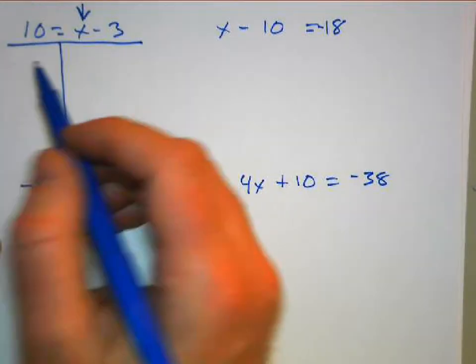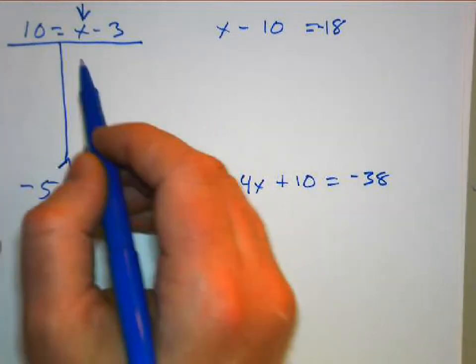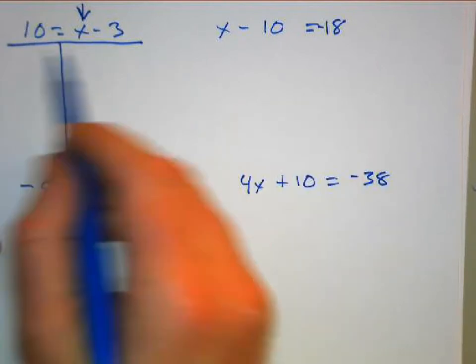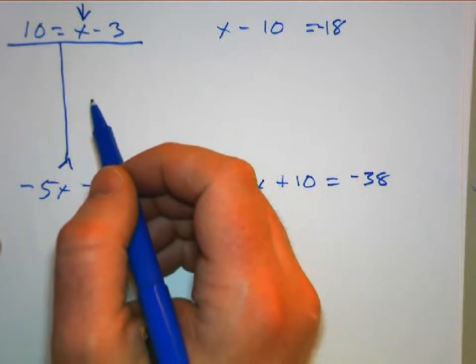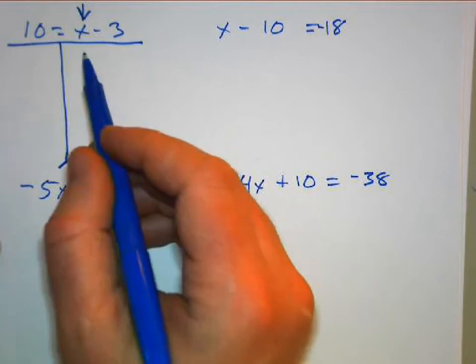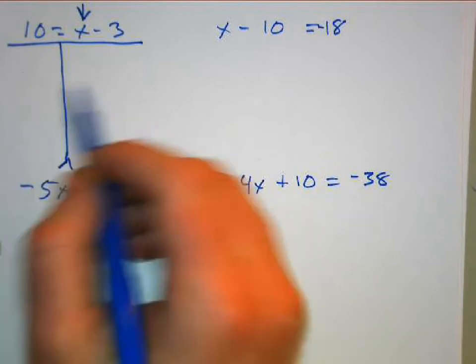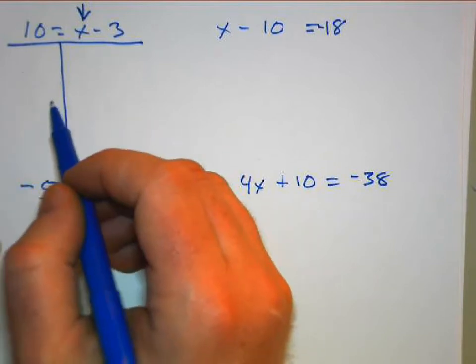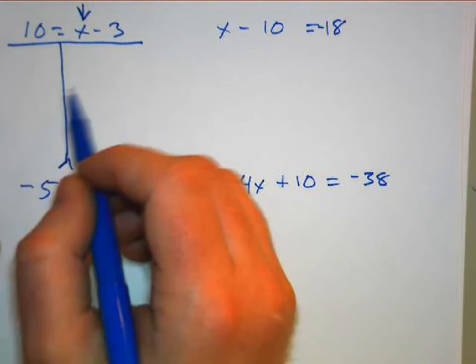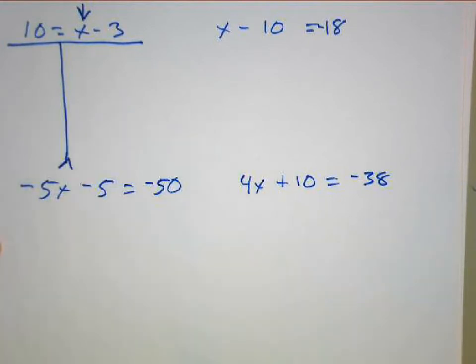This deals with our properties of equality. When we add something to both sides, the equation stays the same. When we subtract something from both sides, the equation stays the same. So we are going to follow that principle of equality.